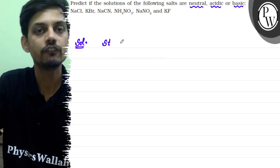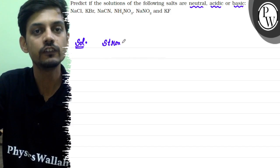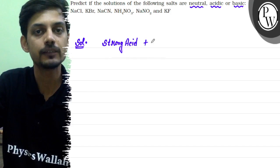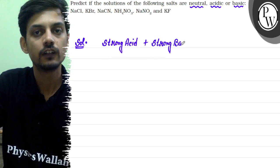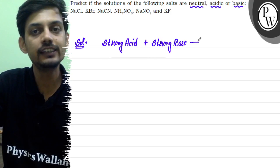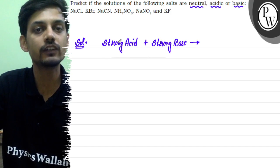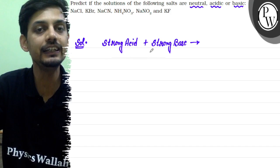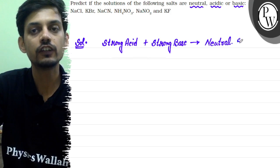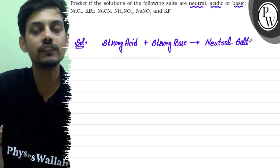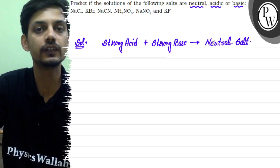The first category: a salt can be formed by the neutralization of a strong acid with a strong base. In this case, both the acid and base are strong, so they completely neutralize each other, and this type of salt is neutral. Salts formed by neutralization of a strong acid with a strong base are neutral salts.